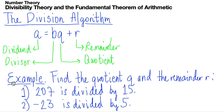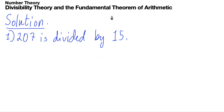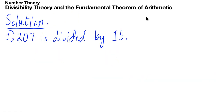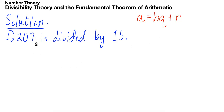What we're going to do here is find the quotient q and remainder r for examples one and two — the division algorithm in action. Remember that our division algorithm is in the form a equals b times q plus r. So: the dividend equals the divisor times the quotient plus r. Number one: 207 is divided by 15.